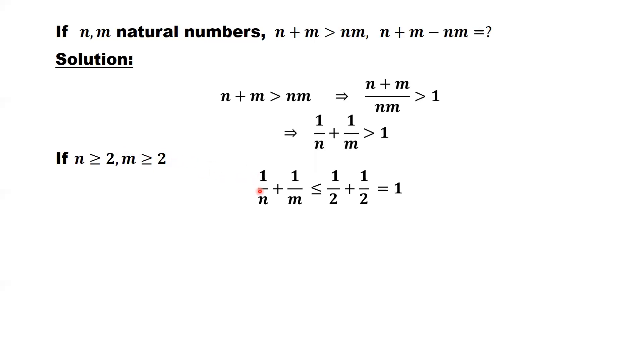this implies 1 over n less than or equal to 1 over 2, 1 over m less than or equal to 1 over 2. Sum of those 2 equal to 1. This implies 1 over n plus 1 over m equals 1. So this is less than or equal to 1, but here we have bigger than 1. This is impossible.